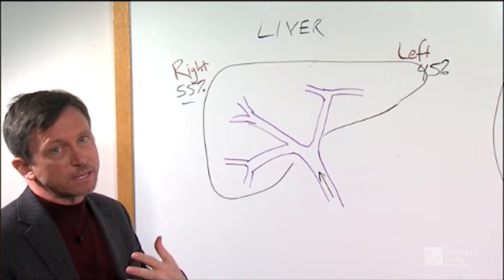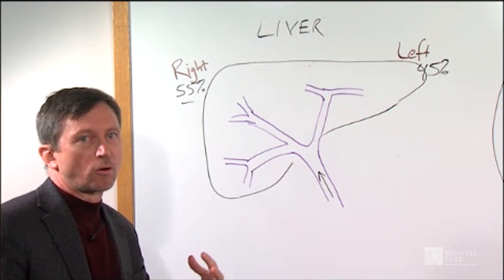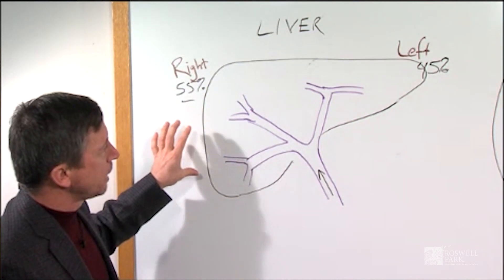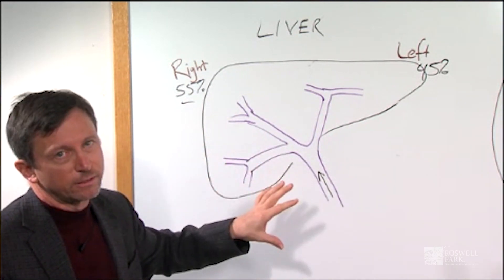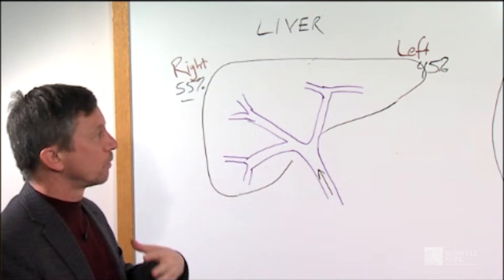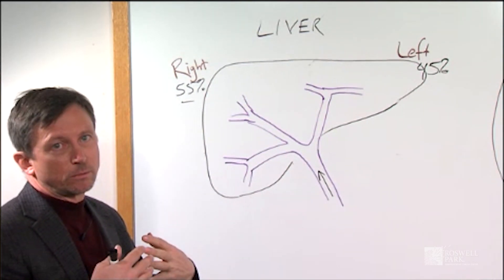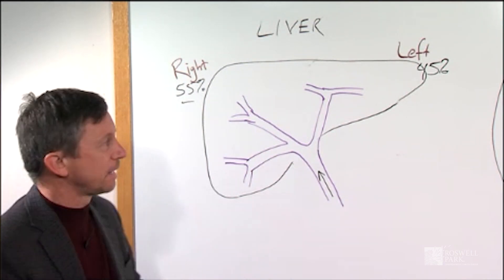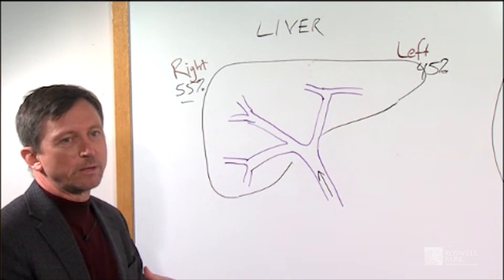As we get older, and as other things happen with the liver — for example, someone who had chemotherapy, or someone who may have hepatitis or other liver problems — the liver's ability to grow back is impaired. So in a healthy liver, while we might be able to remove 75%, in a less healthy liver we may only be able to remove half. Otherwise, if we remove too much, after surgery you would develop liver failure.